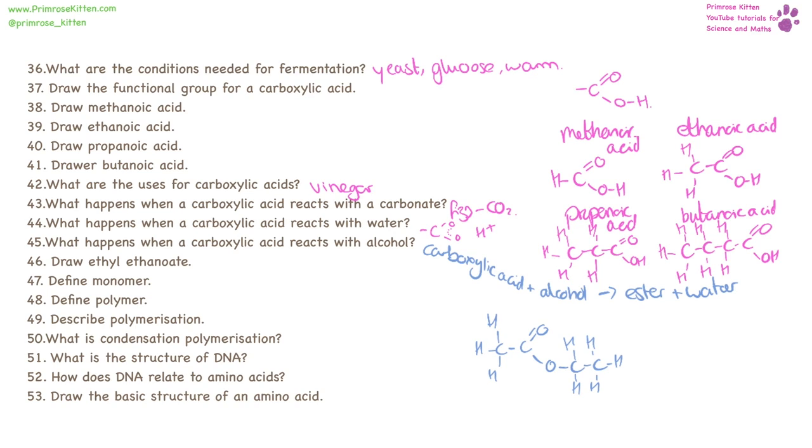A monomer is a small bit. A polymer is lots of small bits joined together. Polymerization is the joining together of small bits. Condensation polymerization is polymerization where a small molecule, usually water, is released.